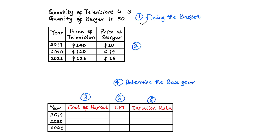Step 1 and step 2 are usually given to you in the question. Step 3 is the cost of the basket. Step 4 is to determine the base year, which is also usually given in the question. Step 5 is the Consumer Price Index, or CPI — we can simply call it the index. Step 6, the last step, is to calculate the inflation rate using the growth formula. Now let's look at how to calculate steps 3, 5, and 6.